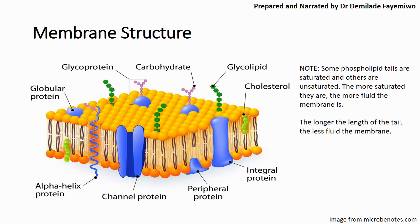You can see there is something called a channel protein. We have channel proteins and carrier proteins in the cell membrane. We also have what we call glycoproteins — a glycoprotein is simply a protein that has a carbohydrate attached to it. You also have glycolipids, which are lipids attached to a carbohydrate. The part that says 'glyco' refers to a carbohydrate. There is also cholesterol, which is an integral part of the cell membrane.